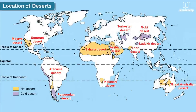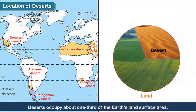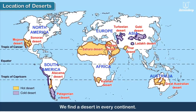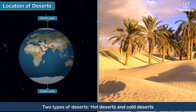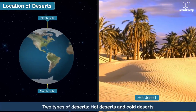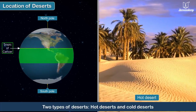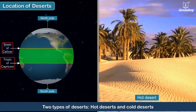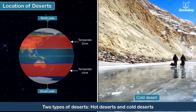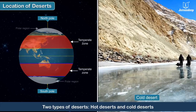Location of Deserts. Deserts occupy about one third of the earth's land surface area. We find a desert in every continent. There are basically two types of deserts: hot deserts, which lie near the Tropic of Cancer and the Tropic of Capricorn, and cold deserts, which lie in the temperate zones or near the polar regions.